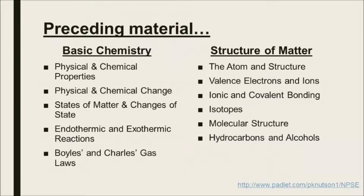In the months preceding the radioactivity unit, we do go through what I like to call Chemistry Junior — a very elementary level chemistry course where we hit all the basic physical and chemical properties and changes, states of matter, basic reactions, and gas laws. We also spend a good deal of time on the structure of the atom itself, how the nucleus is set up, valence electrons, ions, and how they relate to bonding. We go through isotopes, molecular structure, and even touch upon hydrocarbons and alcohol.